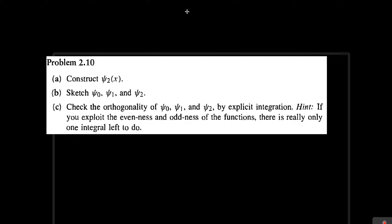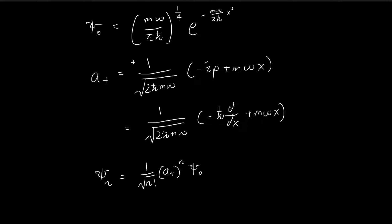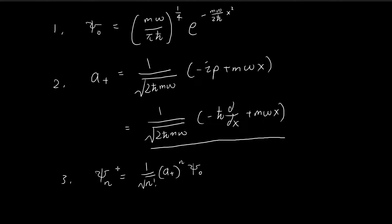In part a, we need to construct the second stationary state. In order to do that, we need three ingredients. The first is ψ₀, the zero stationary state. The second is the ladder operator a+, which is equal to this expression — two ways of writing out the same thing. And third, we need this formula.